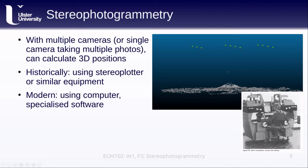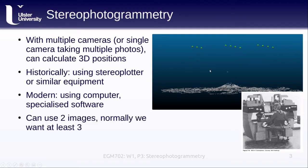This example uses some of the data from the practical for next week. I have a number of camera positions estimated over the Mount St. Helens volcano from historic air photos, and you can see the three-dimensional shape of the volcano estimated from the points in the images. We need at least two images to do stereophotogrammetry.